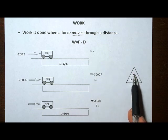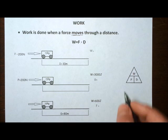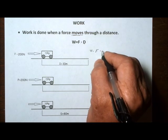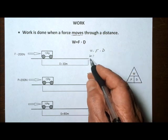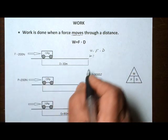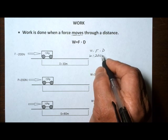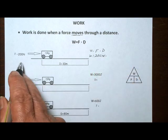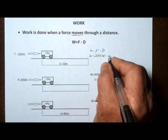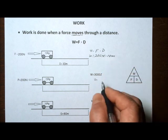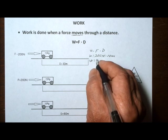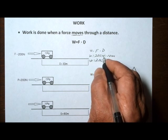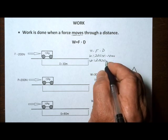We know that work equals force times distance, so we can set that problem up: work equals force times distance. Work equals the force — we're given 200 newtons — times the distance, and the distance is 10 meters. We can calculate that: 200 times 10 gives us 2,000 newton meters.